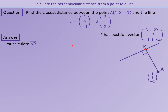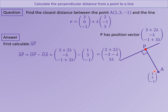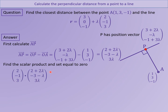Now that we have a position vector for P, we can find vector AP. AP is found by calculating OP minus OA, which gives us (2 + 2lambda, -3 - lambda, 3lambda). We know that AP must be perpendicular to the direction vector of the line (2, -1, 3) in order for AP to be the shortest route. So we find the scalar product of AP with the direction of the line, set it equal to zero, and solving the equation gives us lambda equals negative one half.